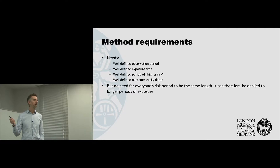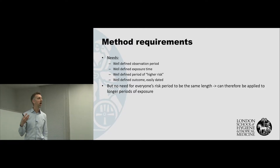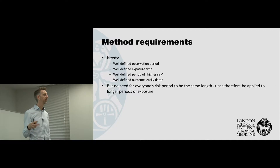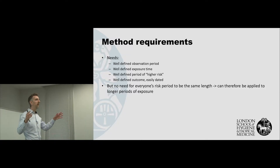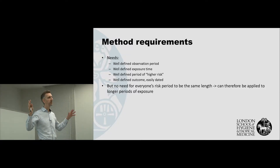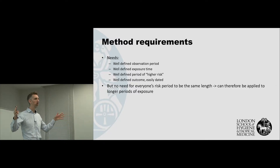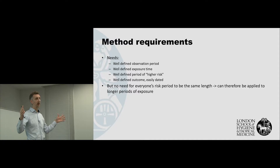For the self-controlled case series, there are some requirements that we have to meet in order to be able to use the design. First of all, we need to have a well-defined observation period. We need to know when we start observing patients and when we finish observing them, because I need to be sure that during that period I would be able to see if they had both the exposure and the outcome, and when they had it.